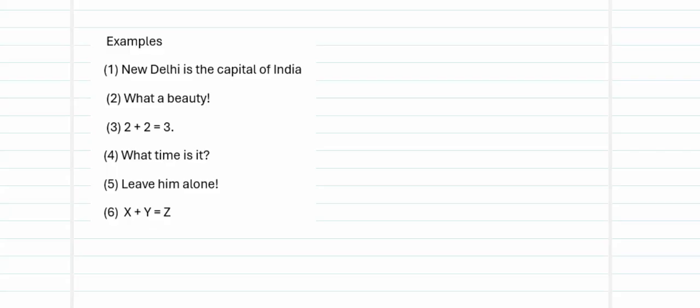Consider the example: 'New Delhi is the capital city.' Is this a valid proposition? The output must be either true or false. The answer is true, so this is a valid proposition. Next, 'Wow, what a beauty I say' — beauty differs from person to person, so it will not always take the value true or always false. This exclamatory kind of statement is not a valid proposition.